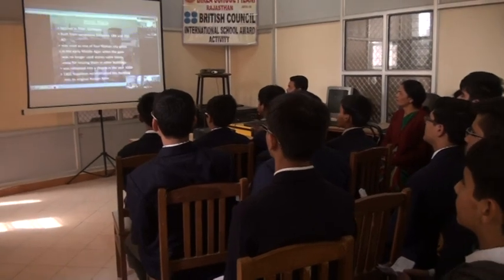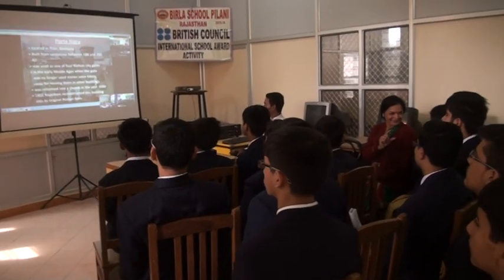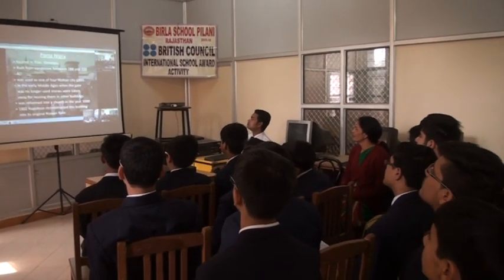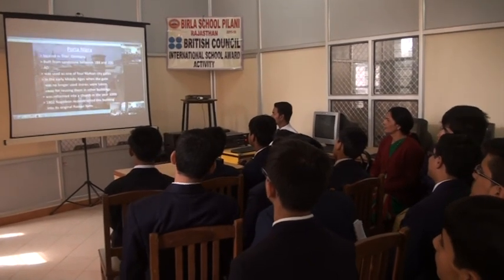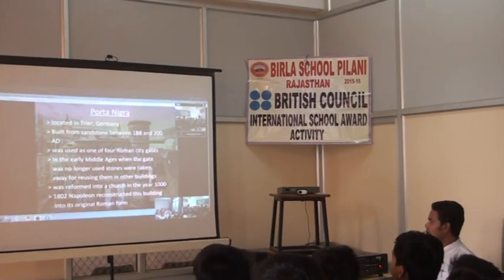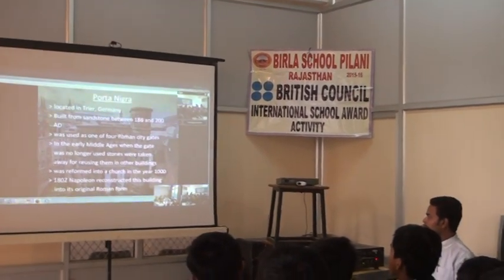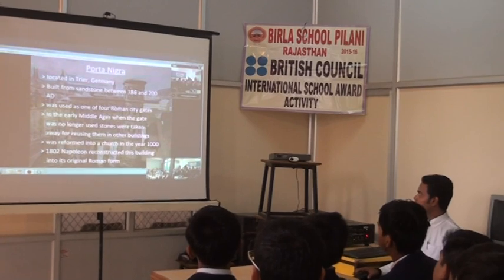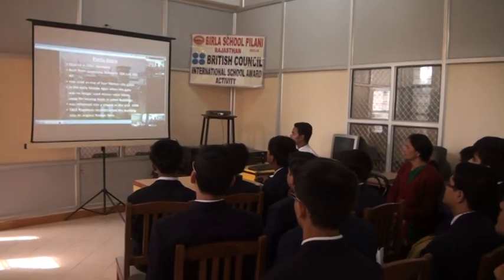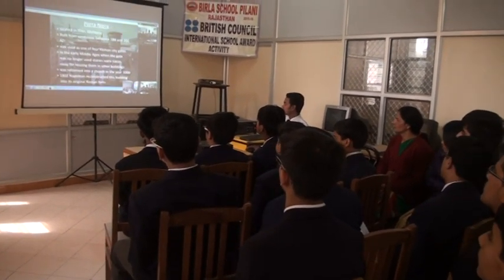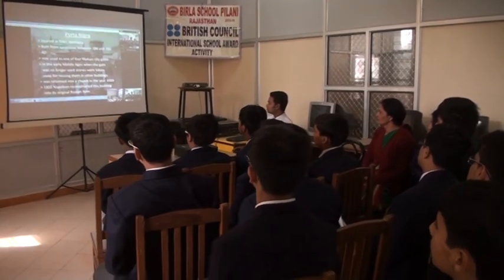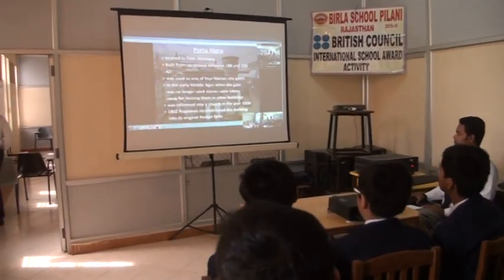Now I'm going to talk about Porta Nigra. It's located in Trier, Germany. It's built out of sandstone between 186 and 280 AD. It was used as one of the Roman city gates. In the Middle Ages the gates were no longer used, and stones were taken away for reuse in other buildings. It was converted into a church in the year 1000, and in 1802 Napoleon restored this building to its original Roman form.